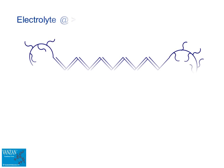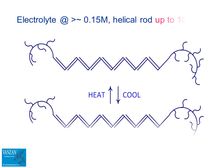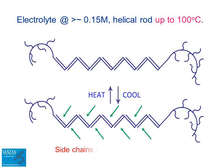At electrolyte concentrations greater than about 0.15 molar, however, the rigid helical rod is retained up to 100 degrees C. Protection of the backbone by the side chains explains the unusual resistance to chemical and enzymatic degradation.